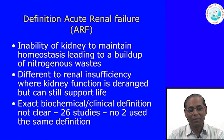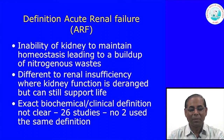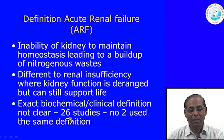What is Acute Renal Failure? The most important component you must understand is the definition: it is the inability of the kidney to maintain homeostasis, leading to a build-up of nitrogenous wastes. There are biochemical parameters we can see in the patient's serum which indicate the kidney is not functioning. There may be renal insufficiency where kidney function is deranged but can still support life.